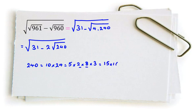It will be 15 times 16. And now, as you can see, you can write 31 as 15 plus 16 minus 2 times square root of 15 times 16.